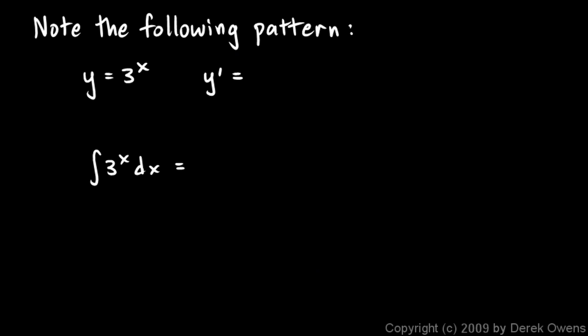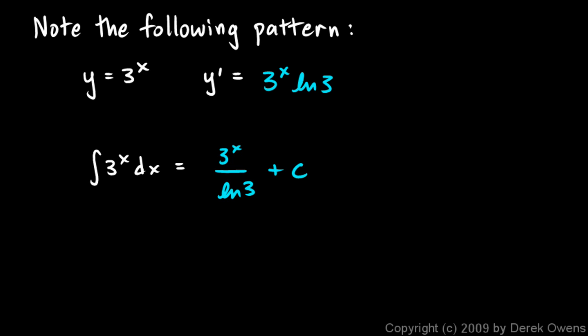A pattern worth noting: if we have y equals 3^x and want the derivative, the answer is 3^x times ln(3). If we want to integrate 3^x, the integral is 3^x over ln(3) plus c. So when differentiating a base-b exponent we multiply by the natural log of the base, and when integrating we divide by the natural log of the base. That's not too hard to remember.